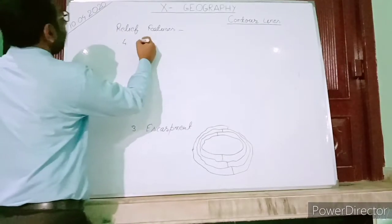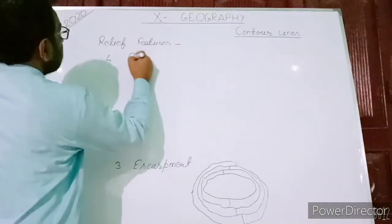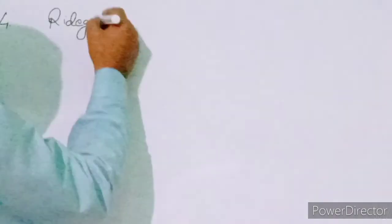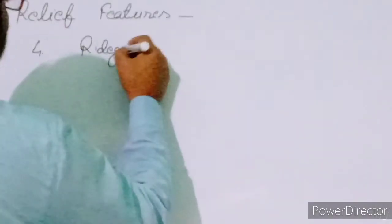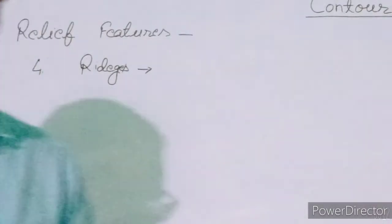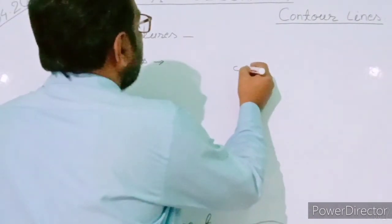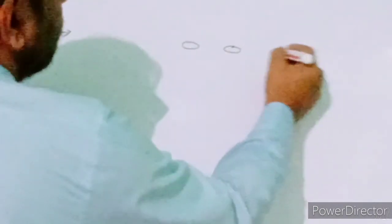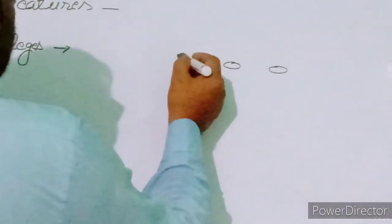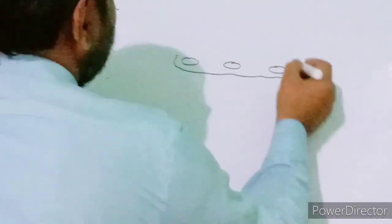The fourth relief feature is ridges. Ridges are the uplifted portions of elevation or altitude. The oval forms shown represent the different peaks of that elevation, and those peaks are surrounded by contour lines.